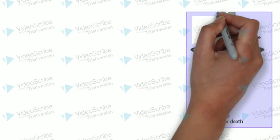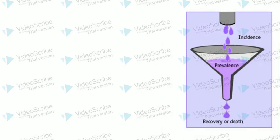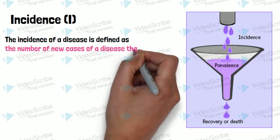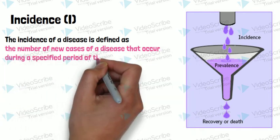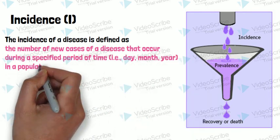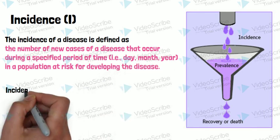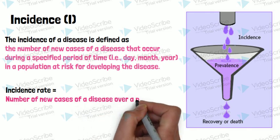Incidence is defined as the number of new cases of disease that occur during a specified period of time—it may be days, months, or years—in the population at risk for developing the disease. Incidence rate equals the number of new cases of the disease over a period of time divided by population at risk during the given time period times by K. K may be 100, maybe 1,000, or 10,000.